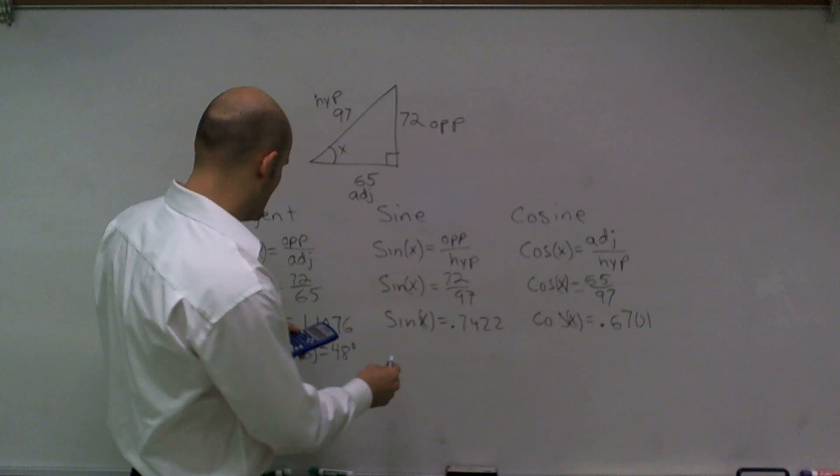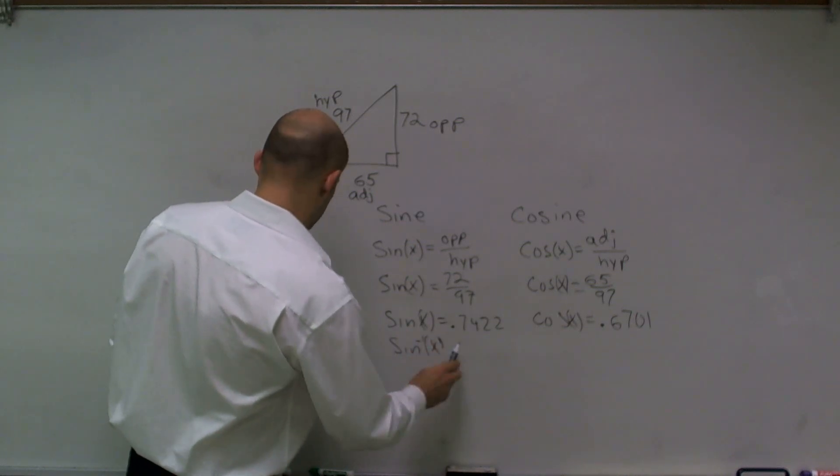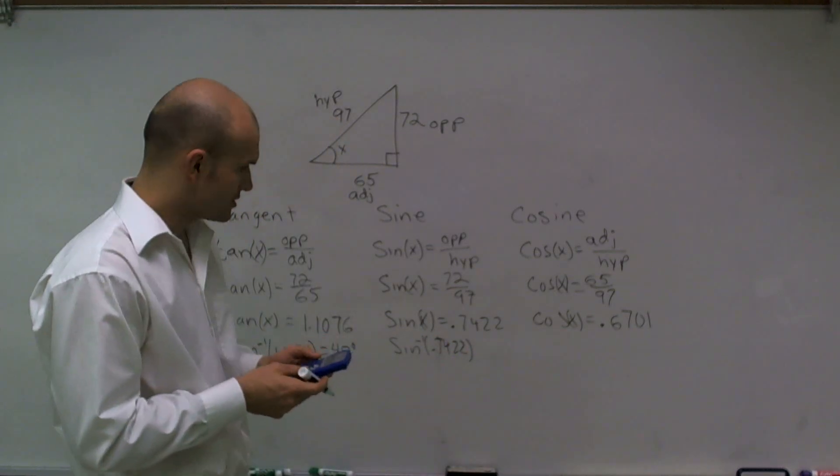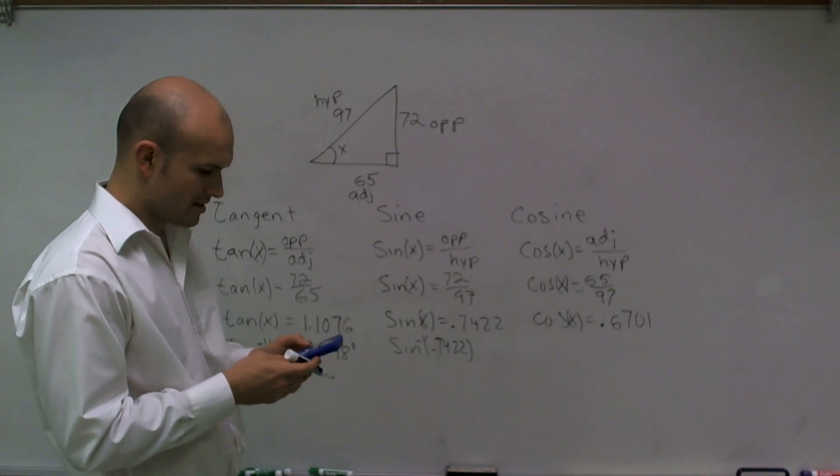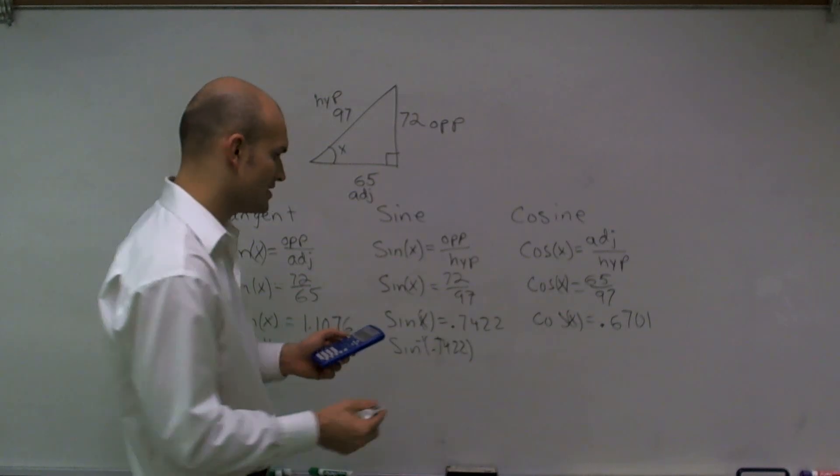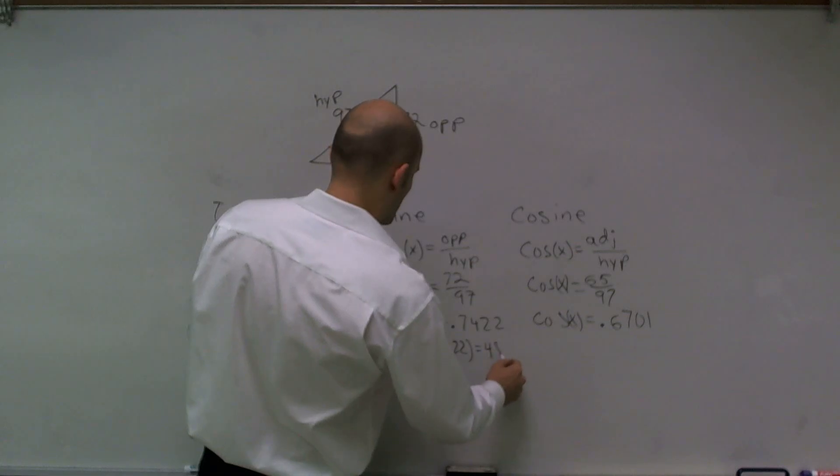When I do the inverse sine of 0.7422, I'll do 72 divided by 97, and then I'm going to take inverse sine of that answer. And again, I get 47.9, which I'll round to 48 degrees.